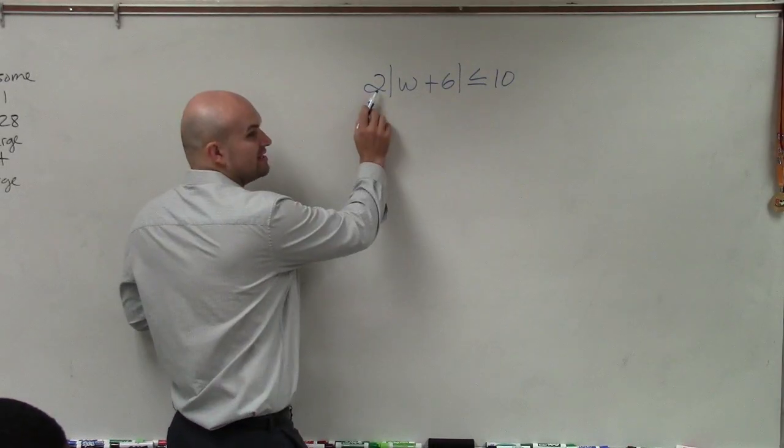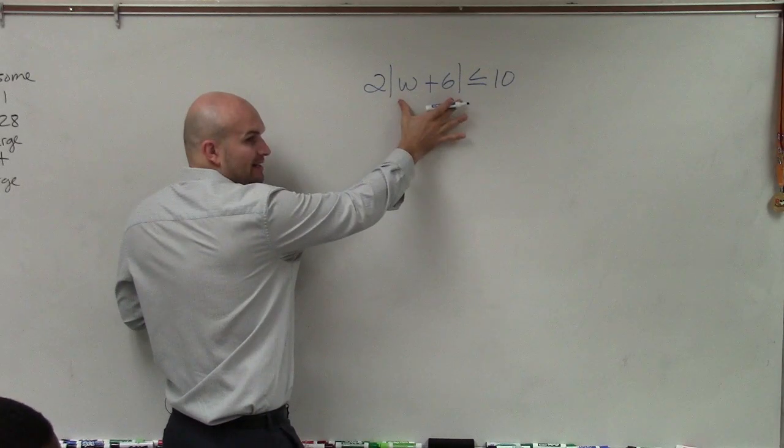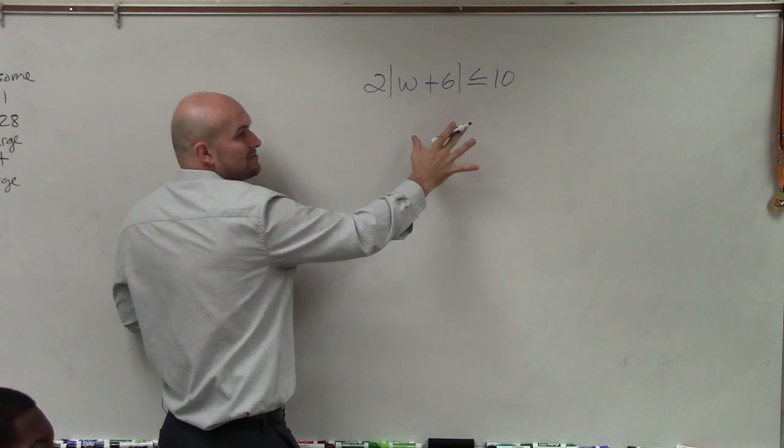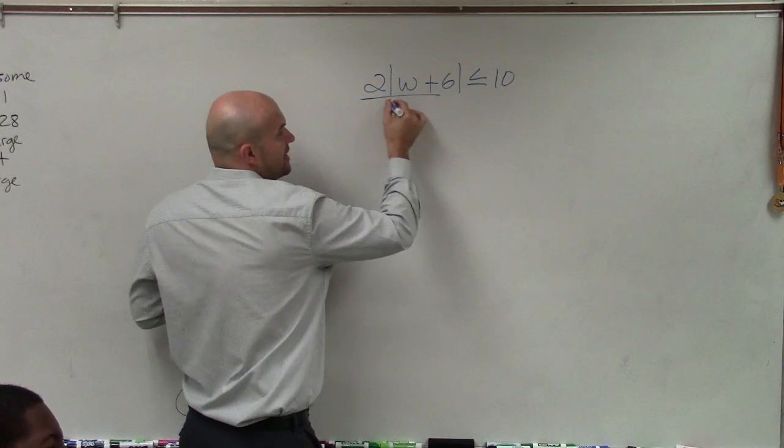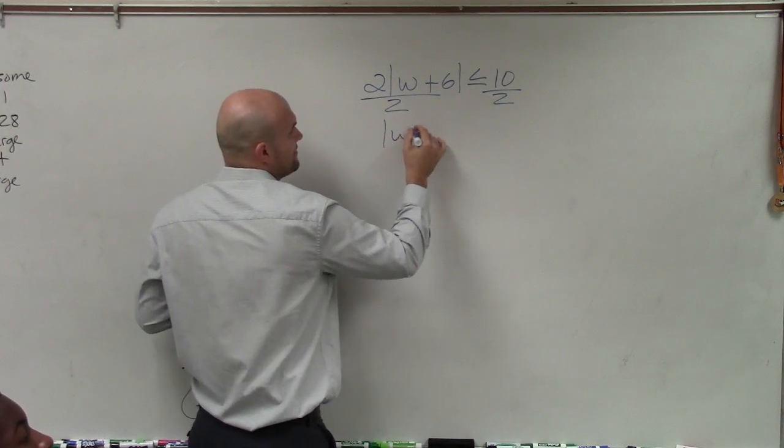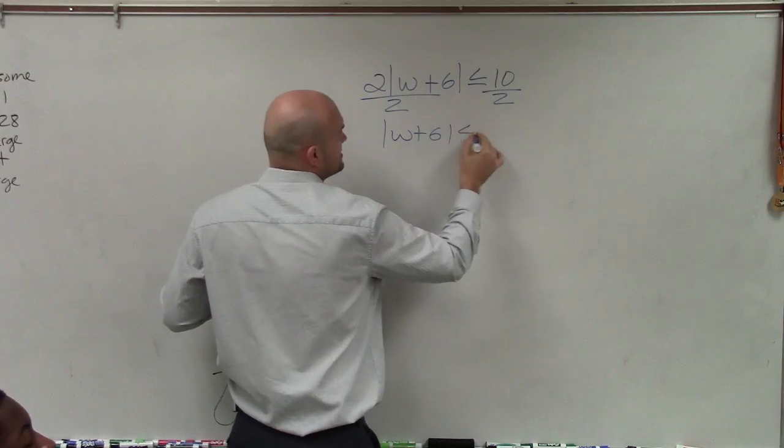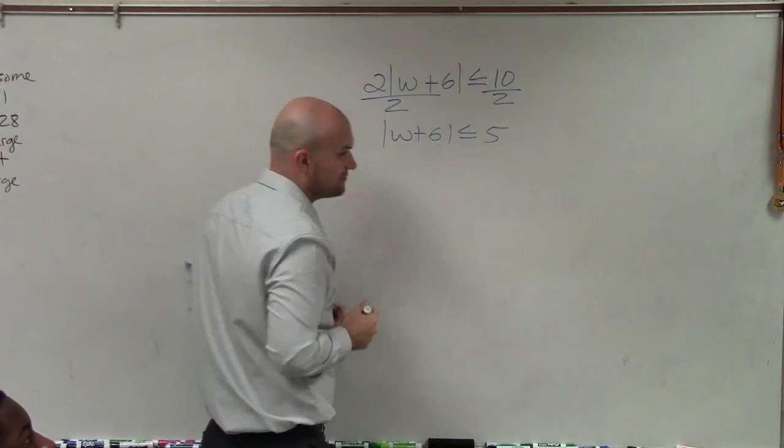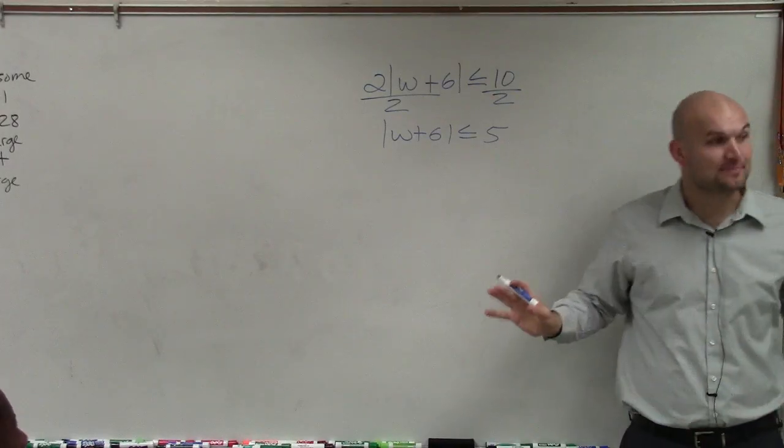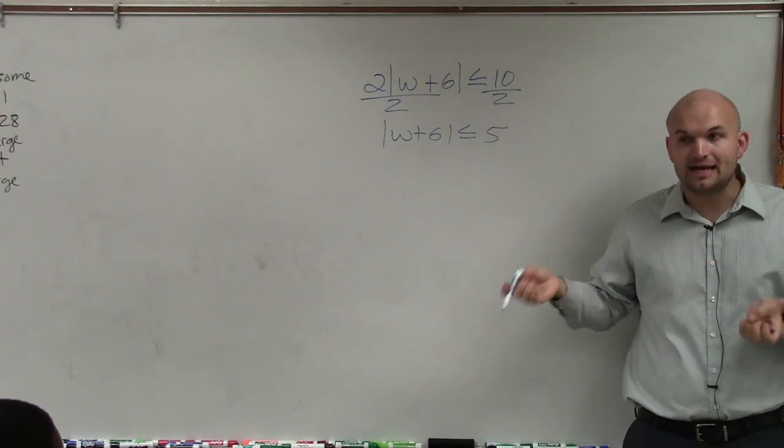So what I notice is my 2 is being multiplied by the absolute value. So you've got to undo everything that is happening to the absolute value first. To do that, I'm going to divide by 2 on both sides. Now I have absolute value of w plus 6 is less than or equal to 5. Does everybody understand what I did? Because absolute value equations is the same thing. You have to isolate it first.